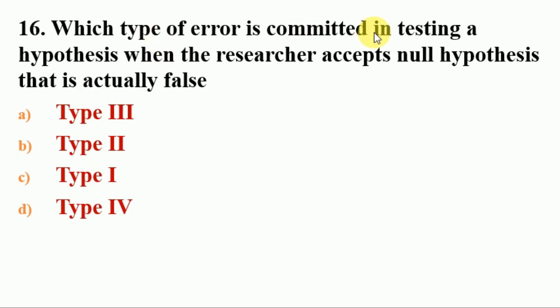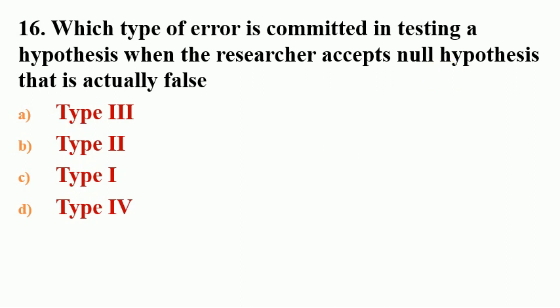Next question: which type of error is committed when the researcher accepts a null hypothesis that is actually false? Options: A. type 3, B. type 2, C. type 1, D. type 4. The answer is B, type 2 error. When a researcher accepts the null hypothesis — that is, accepts there is no relationship between variables — even though a relationship actually exists, this is a type 2 error. In a type 1 error, the researcher rejects the null hypothesis even if it is true — that is, accepts a relationship between variables even though none exists.